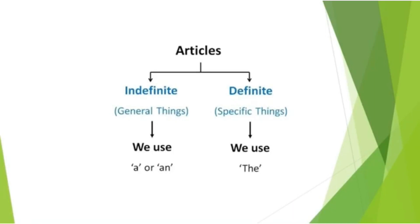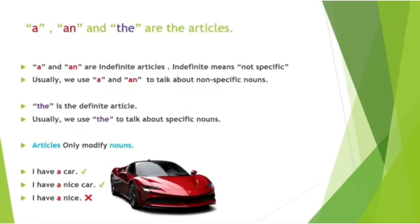Articles are divided into two types: number one is indefinite, and the second one is definite. In indefinite we talk about general things, and in definite we talk about specific things. For general things we use 'a' and 'an', and for specific things we use 'the'. The articles 'a' and 'an' are the indefinite articles — indefinite means not specific. Usually we use 'a' and 'an' to talk about non-specific nouns, and 'the' is the definite article, used to talk about specific nouns.